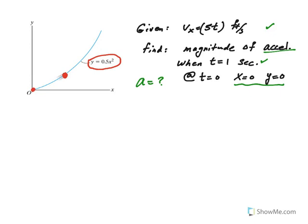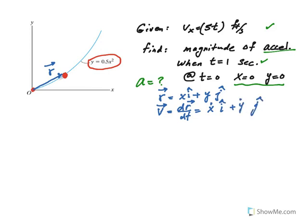If we define the position vector r, which keeps track of the position of this particle, r is defined as x i plus y j in the two-dimensional rectangular coordinate system. Then velocity is the rate of change of r, and that becomes x dot i plus y dot j. This is the x component of velocity, and this is the y component of velocity.